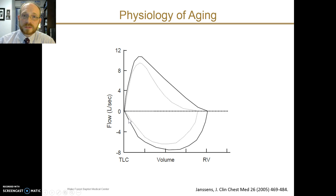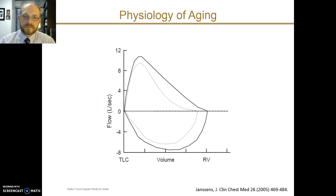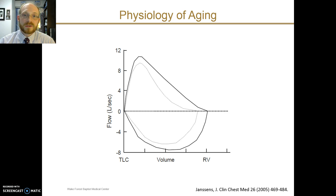These two flow volume loops also demonstrate these changes. The younger individual is shown by the solid line with a nice normal-shaped descent of the expiratory limb. In the older individual, the descent is slowed, representing the normal decrease in the FEV1/FVC ratio with aging. This is one reason why the FEV1/FVC ratio is known to differ in normal populations based on age.